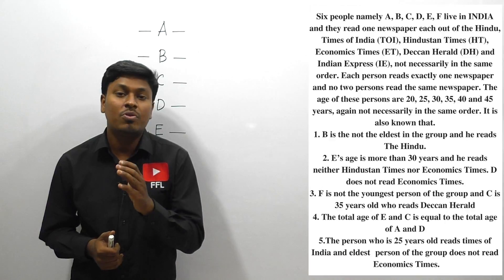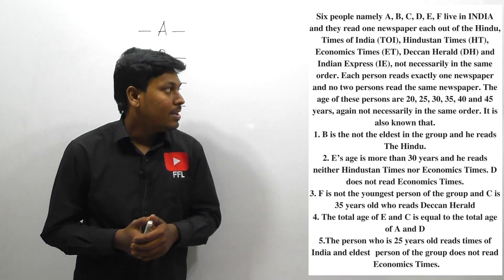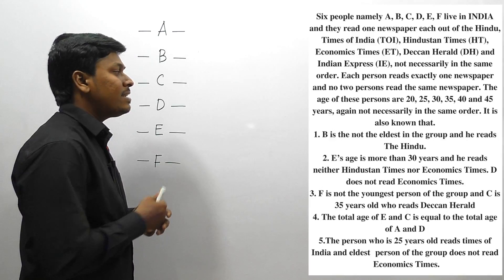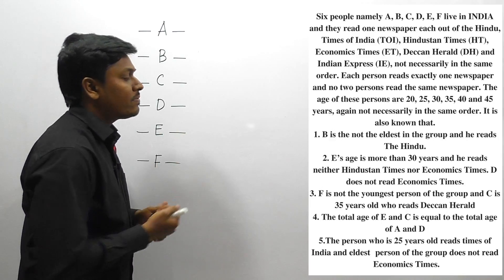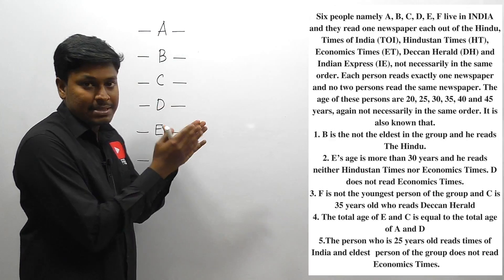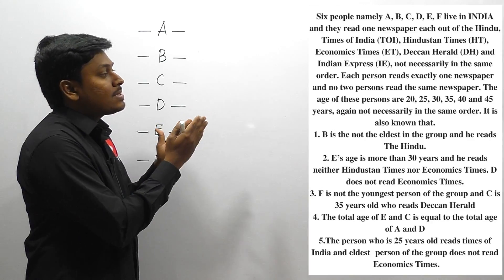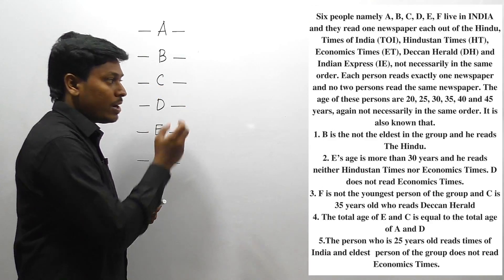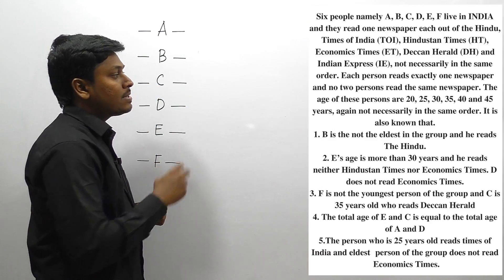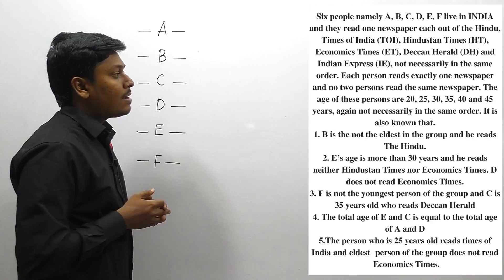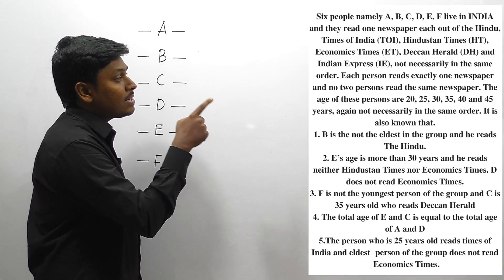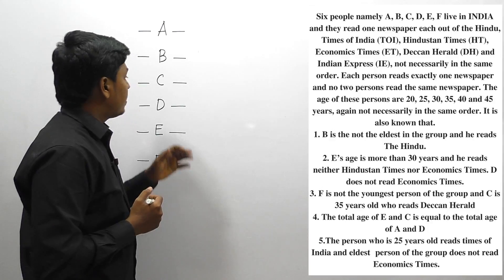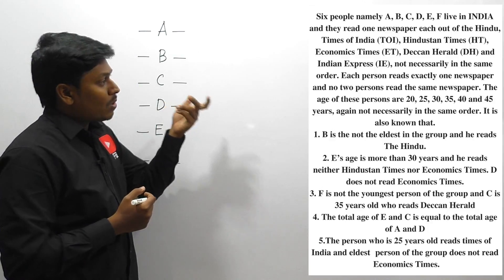Let me move on to puzzle number five. Six people, namely A to F, live in India and read newspapers such as Hindu, Times of India, and others. There are six persons in total, all reading various newspapers. Each person reads exactly one newspaper and no two persons read the same newspaper. The ages given are 20, 25, 30, 35, 40, and 45. Our target is to find who is reading what newspaper and the age of each person.